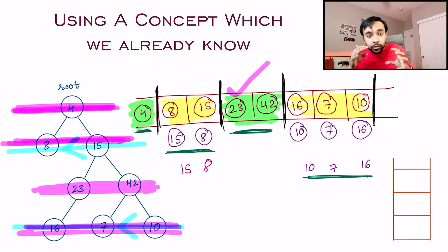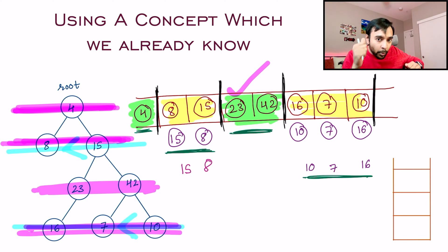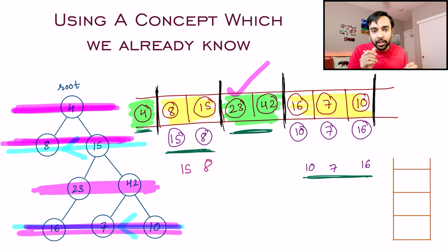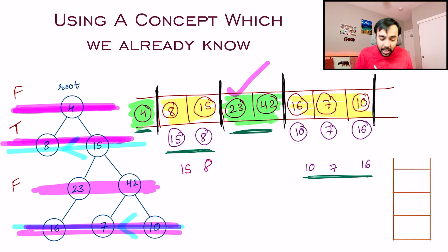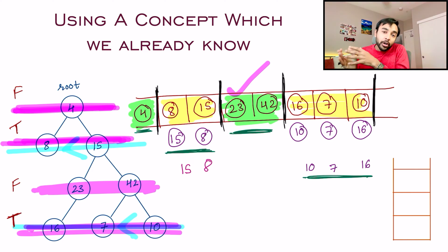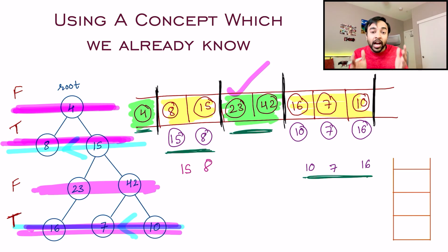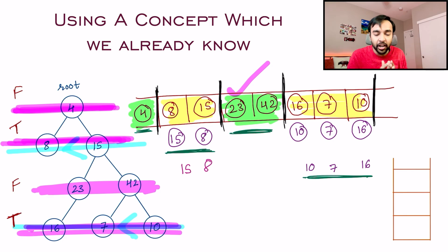We took the help of the level order traversal technique and made a small change to get it in a zigzag fashion. To achieve this, use a flag variable: keep the flag false for the first level. As soon as you move to the next level, flip it to true. If it is true, use a stack. As soon as the level is over, flip the flag again to false — do not use a stack. Flip again on the next level and add elements to the stack once more.